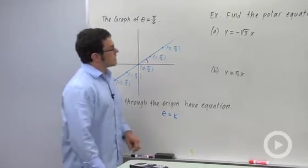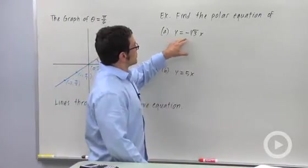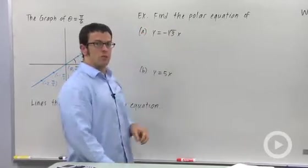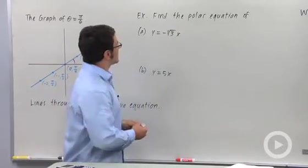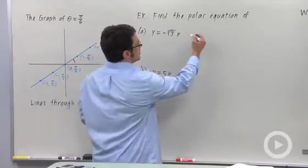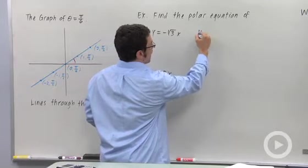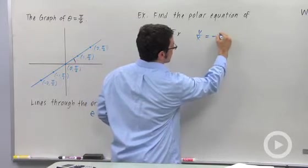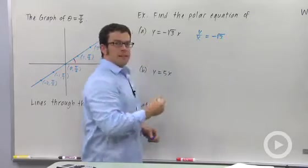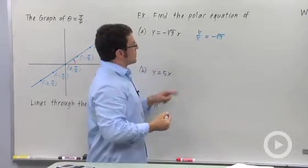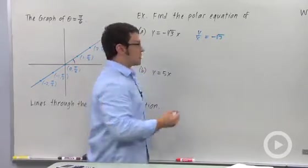So let's use that and find the equations for some lines that pass through the origin. Like y equals negative root 3x. Now the first thing I would do is write this in the form y over x equals negative root 3. And then make the observation that y over x is the same as tangent theta.